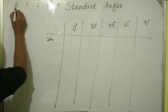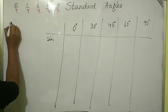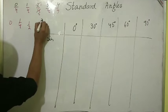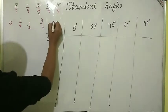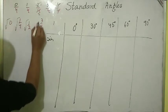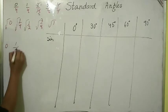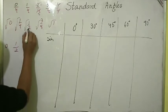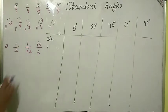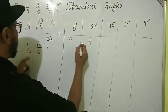Dividing by 4: 0/4 = 0, 1/4, 2/4 = 1/2, 3/4, and 4/4 = 1. Now take the square root of all these values: √0 = 0, √(1/4) = 1/2, √(1/2) = 1/√2, √(3/4) = √3/2, and √1 = 1. These are the values of sine: sin 0° = 0, sin 30° = 1/2, sin 45° = 1/√2, sin 60° = √3/2, sin 90° = 1.